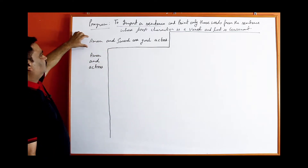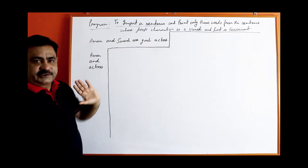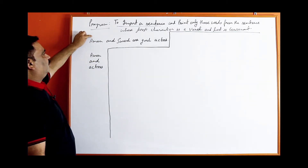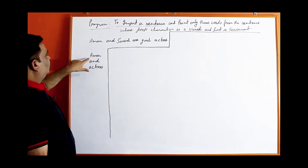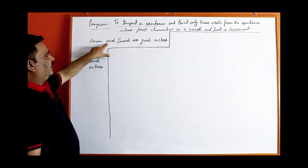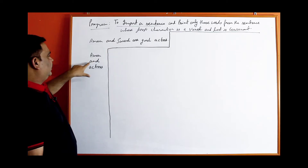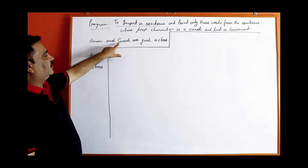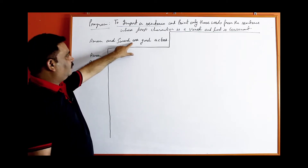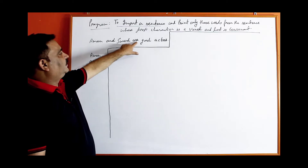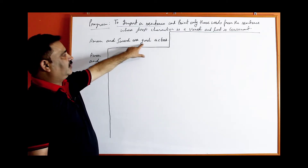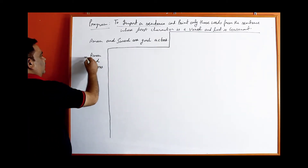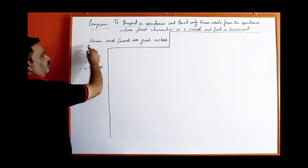For example, take the sentence: 'Aman and Suresh are good for actors.' The word 'Aman' has first character as a vowel and last as a consonant. 'Suresh' — last is consonant but first is not a vowel. 'Are' — first is vowel but last is also a vowel, so it should not be counted. 'Actors' — first character is vowel and last is consonant. So these are the three words from this sentence.